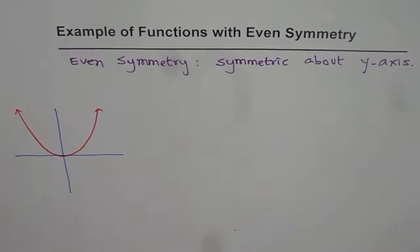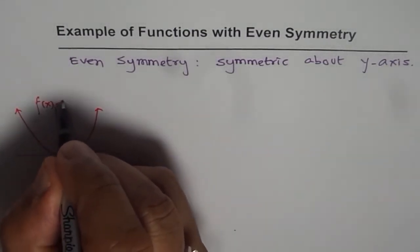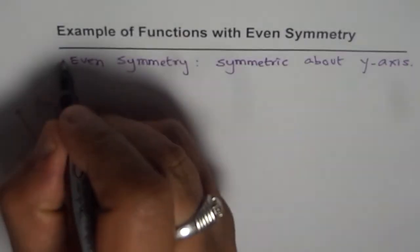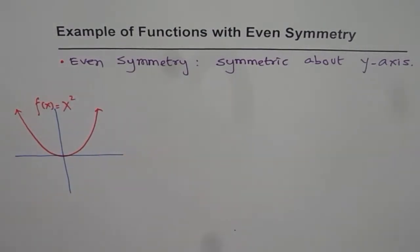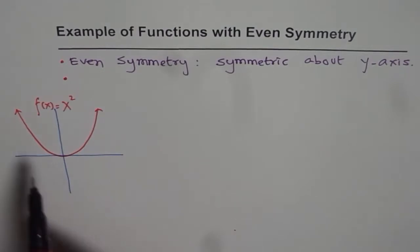For example, a parabola. So we have this function f(x) equals x squared. So this has even symmetry. That is one condition that is symmetric about the y-axis, and that is a test which we can test graphically.